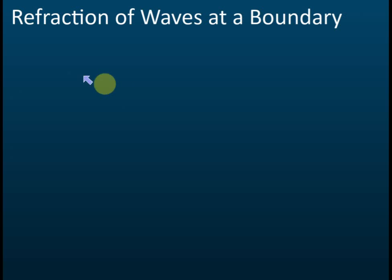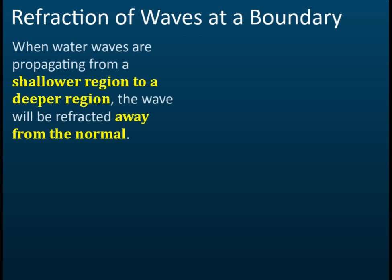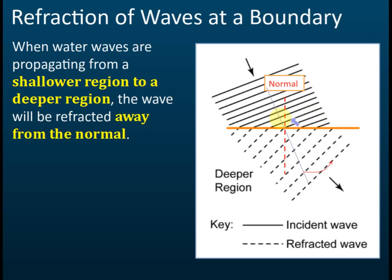The second case: if the wave moves from a shallower region to a deeper region, it will be refracted away from the normal. In the diagram, the shallower region has a shorter wavelength and the deeper region has a longer wavelength. Initially the wave moves in this direction, and after refraction it bends away from the normal.